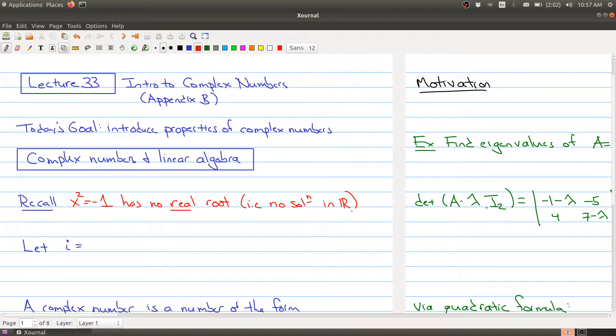We could have picked a different letter, but they use i. i represents the square root of negative one, and this is called the imaginary number.